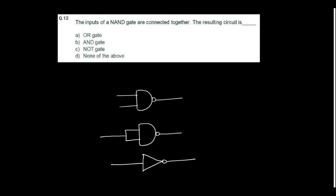The inputs of a NAND gate are connected together. The resulting circuit is. See inputs of a NAND gate are connected together, it is equal to a NOT gate.